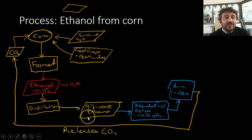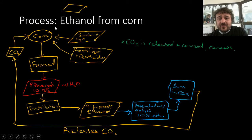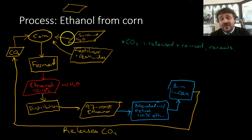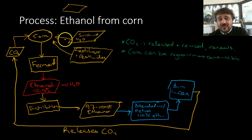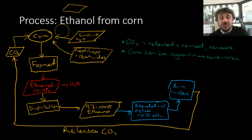This releases carbon dioxide, which can then go back into the corn and so forth. Carbon dioxide is released, reused, and renews. Corn can be grown very quickly, which makes it renewable.